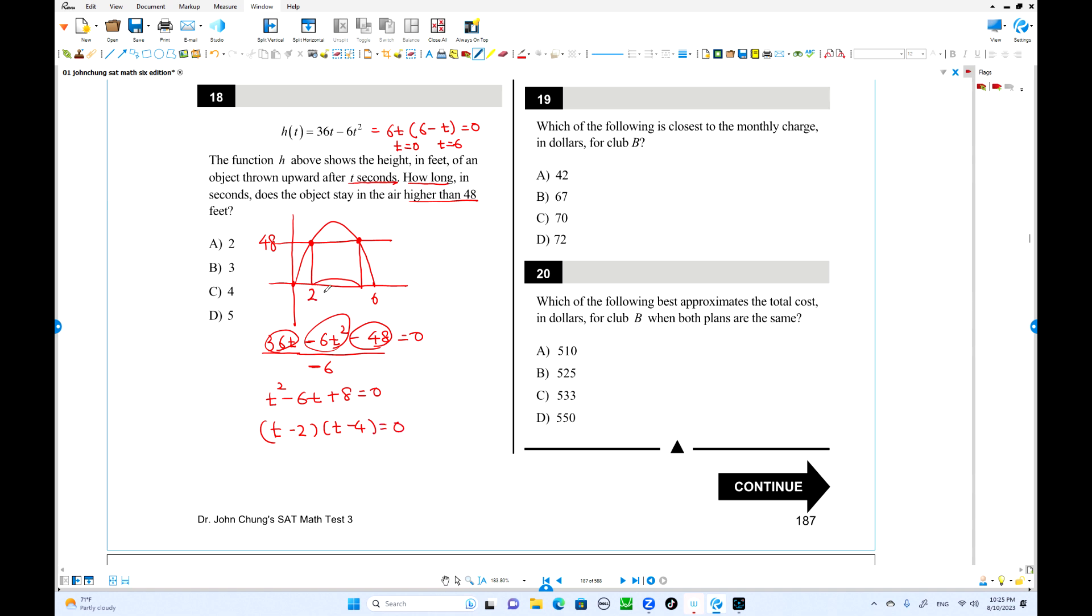So you're going to find the length of this time: 4 minus 2, two seconds. The object must stay higher than 48. Choice A is the answer.